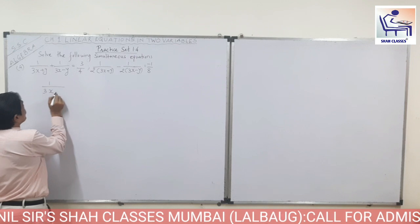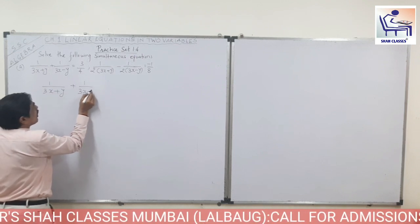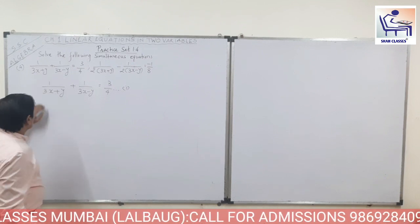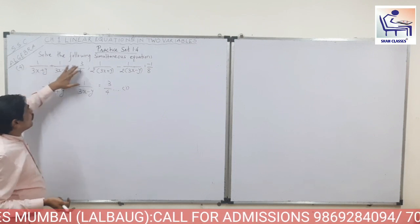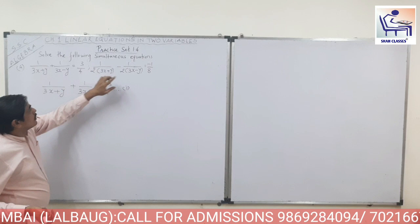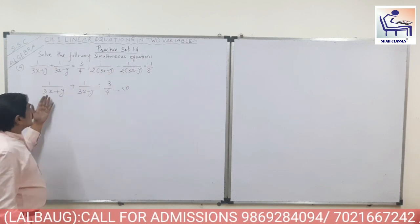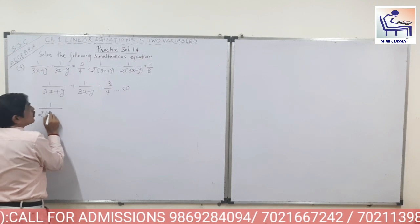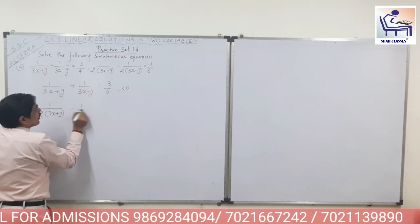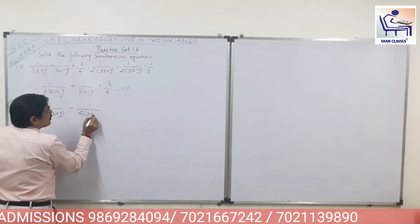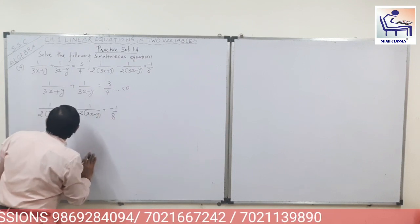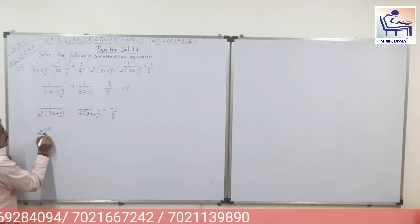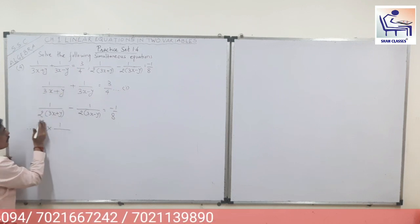Your first equation is 1 upon (3x plus y) plus 1 upon (3x minus y) is equal to 3 upon 4. I have not separated this because the numerator is itself 1 in both terms. Now the second equation is 1 upon 2(3x plus y) minus 1 upon 2(3x minus y) is equal to minus 1 upon 8. I will separate the 1 upon 2 part to make it clearer.